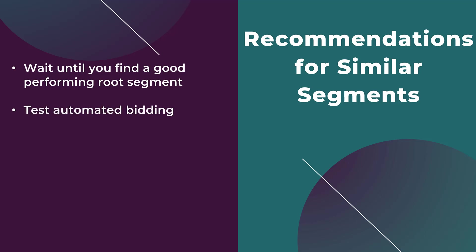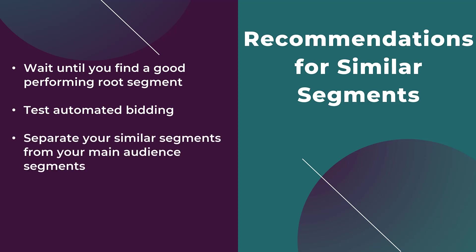This is also where I like to test automated bidding. There are already a lot of moving parts on how these similar audiences are generated, and if you're using website and app-based activity audiences they're automatically updated — so I'd want my bidding to reflect those automatic changes. I typically separate out my similar segments from any other audience or data segments I'm using. Someone who has already visited your website is totally different in intent from someone who has similar behaviors to a visitor. Because of that difference, we leave similar segments within their own campaigns with a different budget and more control over bids and campaign settings.